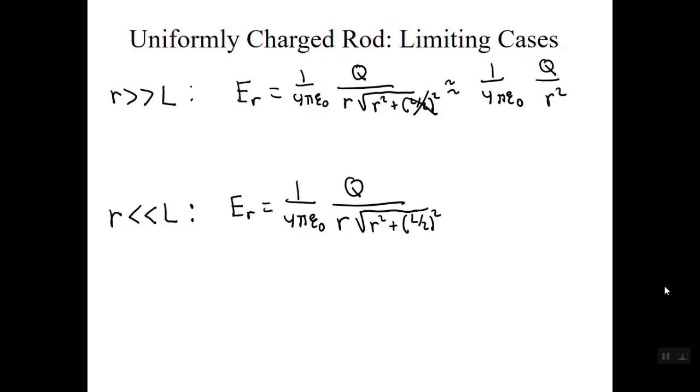If we look at another case where, in fact, we're very close to the rod, that is, r is much smaller than the length of the rod, then we can neglect the term containing r under the radical sign and, with a little simplification, obtain this expression, which tells us that the electric field falls off like 1 over r. As a side note, when we're really close to the rod, this result will still be quite good, even if we're not exactly on the symmetry plane.